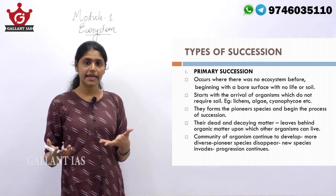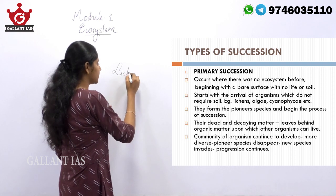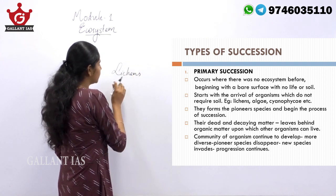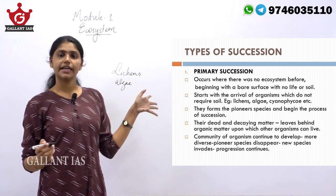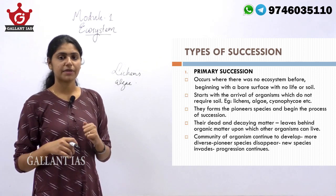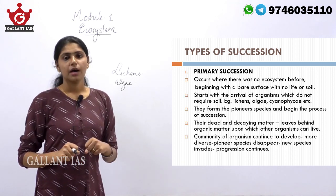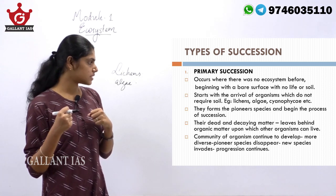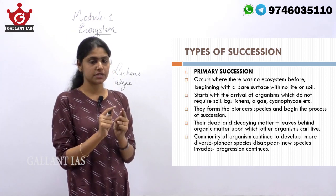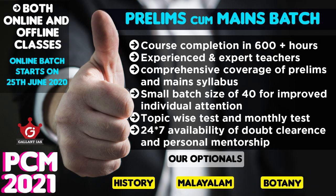Organisms like lichens and algae do not require soil for their living, so they inhabit bare surfaces without soil. They form the pioneer species with respect to that bare surface where no ecosystem previously existed. A new species — say lichens — comes and inhabits the area, so lichens form the pioneer species in primary succession.